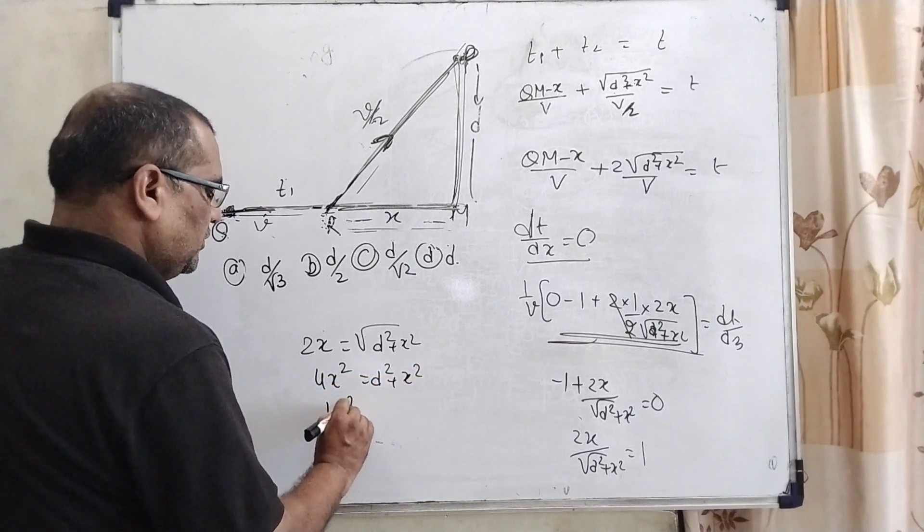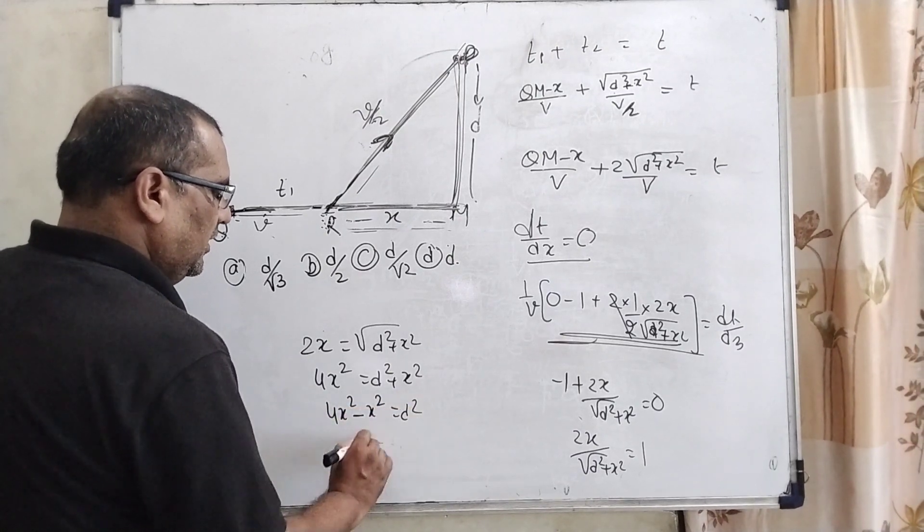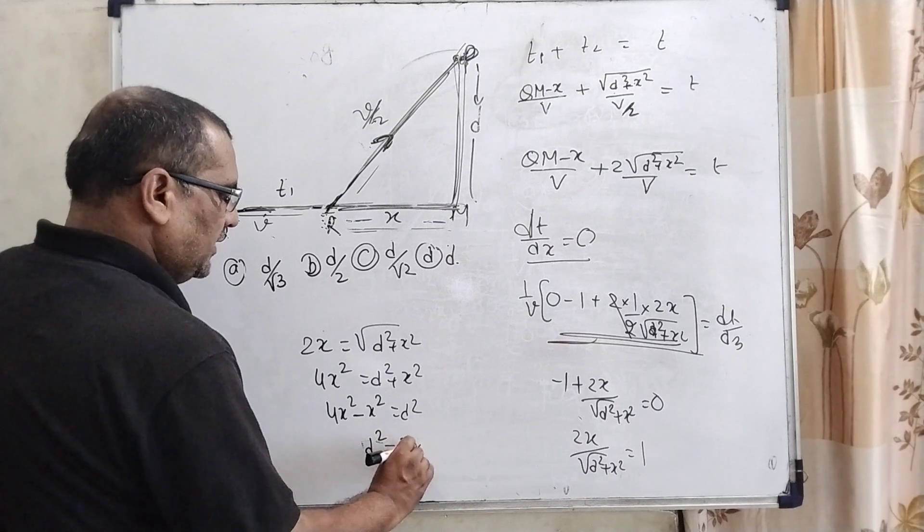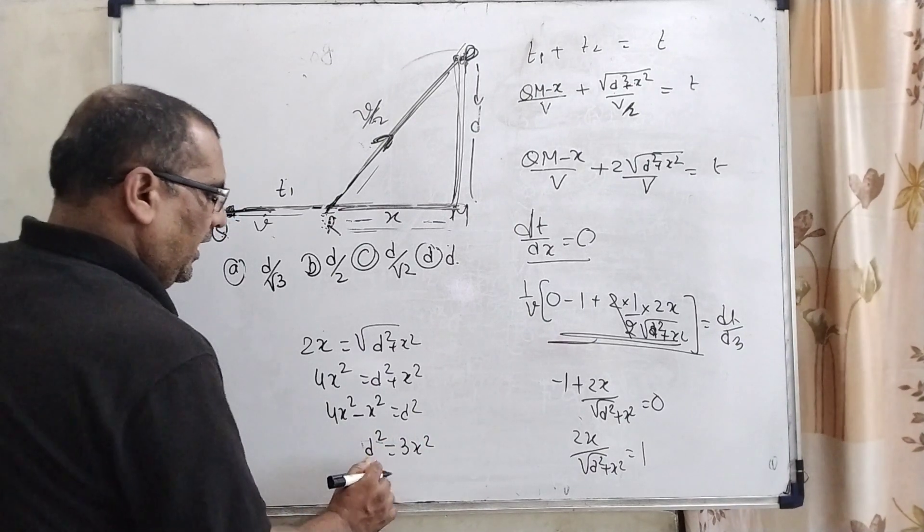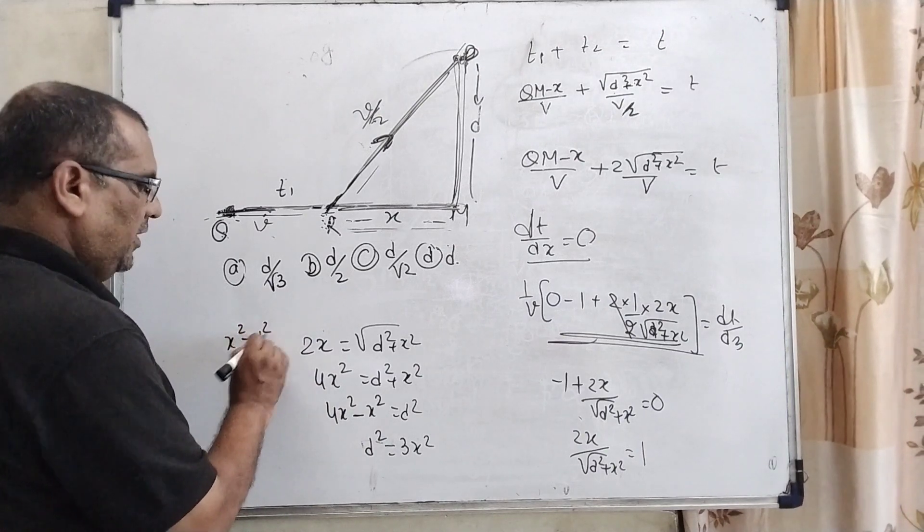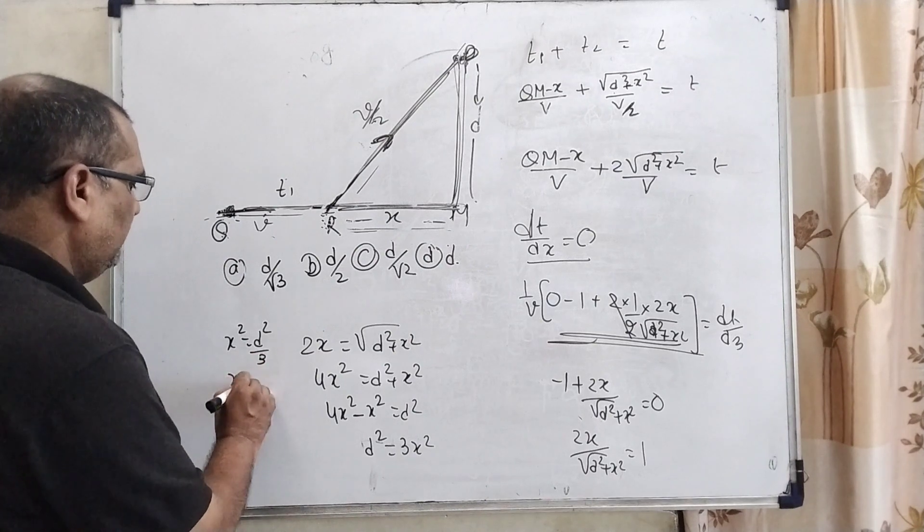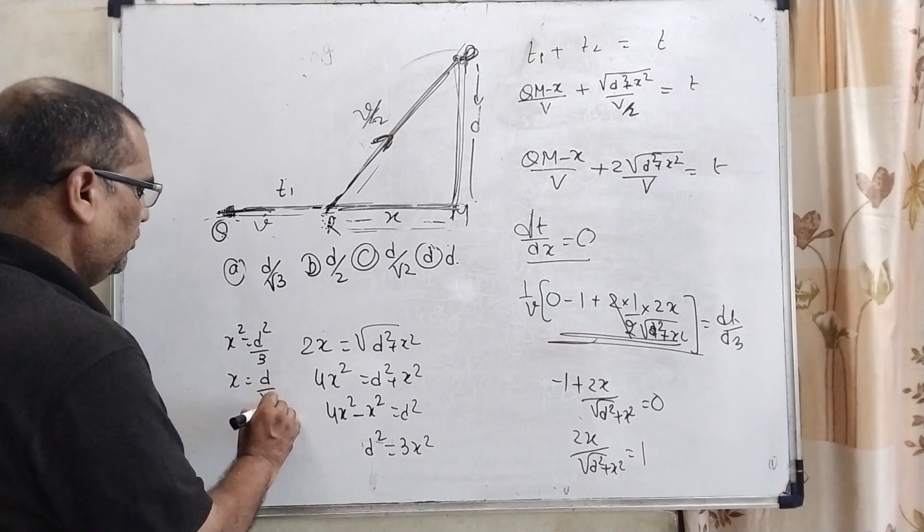x square is transposing to the left side, now becomes minus x square equals D square. Then D square equals 3x square.